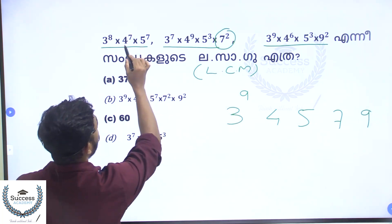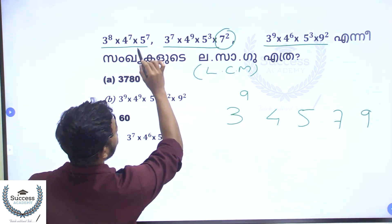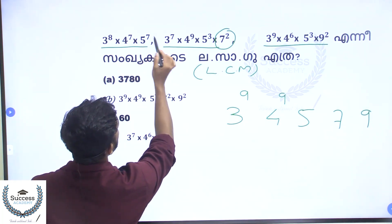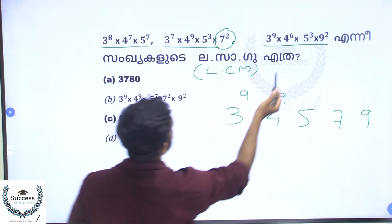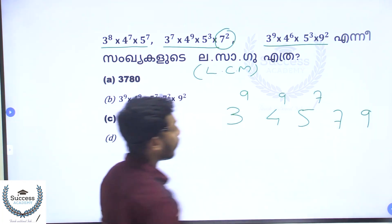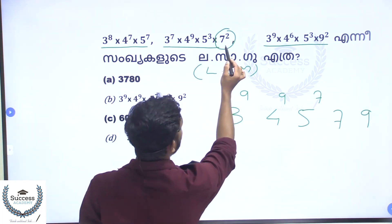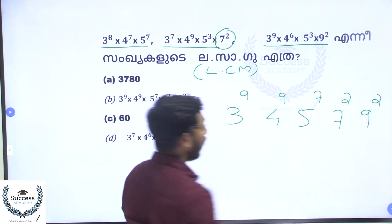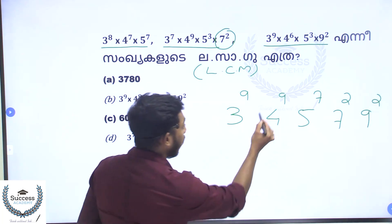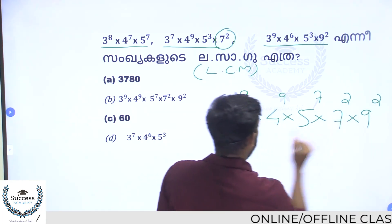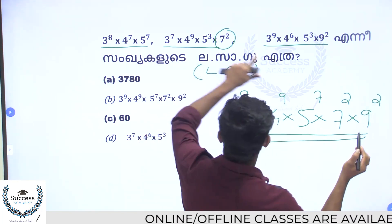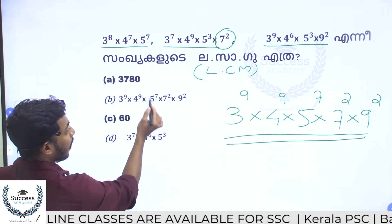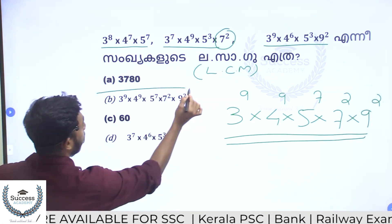Therefore, for base 4, 4 raised to 9 is the highest. For base 5, comparing 5 raised to 7 and 5 raised to 3, so 5 raised to 7. For base 7, 7 raised to 2. For base 9, 9 raised to 2. So the LCM is 3 raised to 9 × 4 raised to 9 × 5 raised to 7 × 7 raised to 2 × 9 raised to 2. Option B is the correct answer.